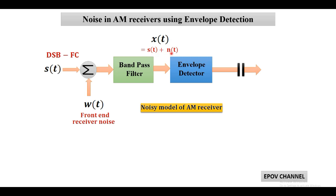After this, the X(t) signal is passed through an envelope detector — that is the detection process of double sideband full carrier AM — and we get output Y(t).